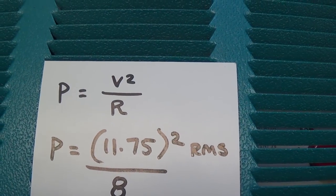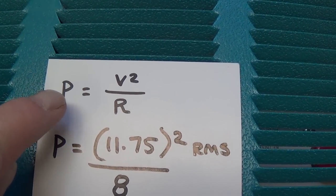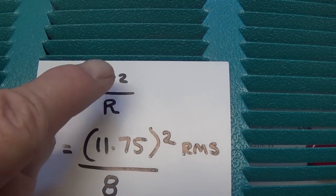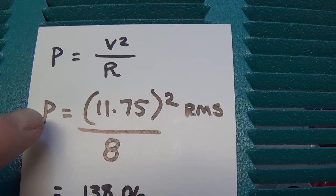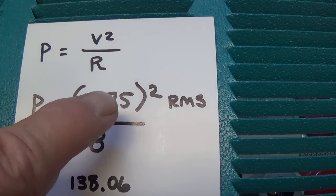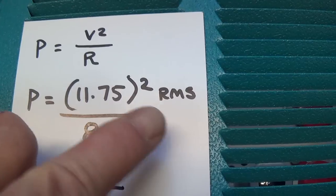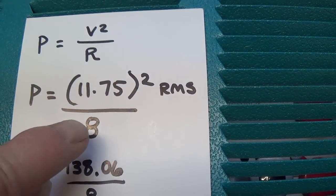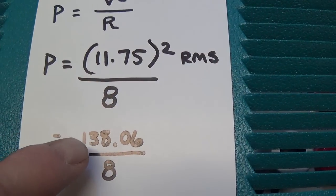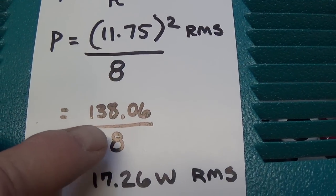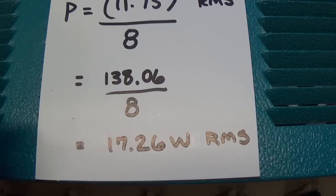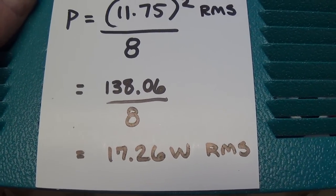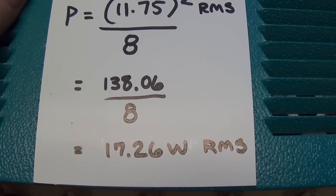Now using Ohm's Law, we know that power in watts is equal to voltage squared divided by resistance. The power then is equal to 11.75 volts RMS squared divided by 8. That's 138.06 divided by 8 or 17.26 watts of RMS output, which is very impressive, I think, for a pair of six BQ5s.